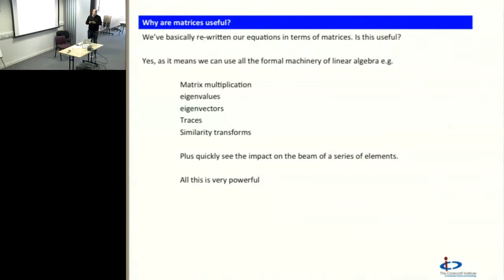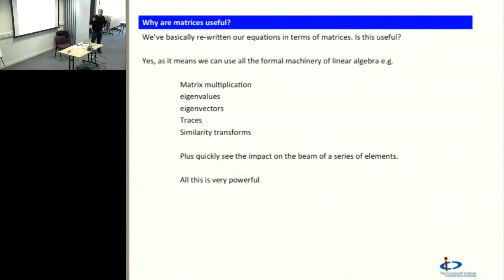Why are matrices useful? It's not a maths course — this is hands-on physics — but we've written all our equations in terms of matrices. All the formal machinery of linear algebra — matrix multiplication, eigenvalues, eigenvectors, traces, similarity transformations — is now available to us as tools to manipulate our system. We can quickly compute the results of a few elements on the beam just by multiplying matrices together. Two-by-two matrices with real entries is something you can do at A-level. The formalism is quite simple on the surface, but there's a lot of physics accessible once you have it written down.